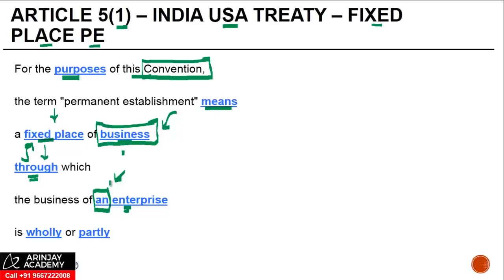The phrase 'wholly or partly' means you may carry on the entire business from such a place, or you may carry on only some part of the operations. If you carry on some part of the operations, there has to be an attribution of income, and accordingly tax will be leviable on the proportionate income — for which you should refer back to Article 7 on business profits. 'Carried on' signifies that the activity should be more than something casual in nature; there has to be some form of continuity. A one-off activity would generally not result in a P.E., unless the nature of the business is such.